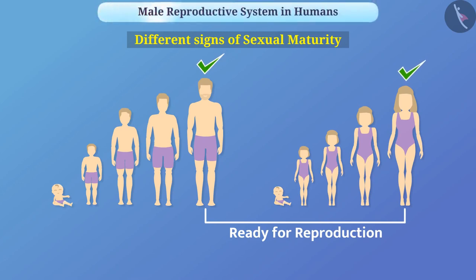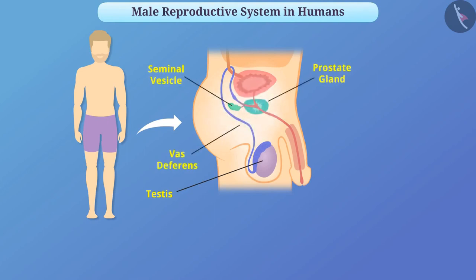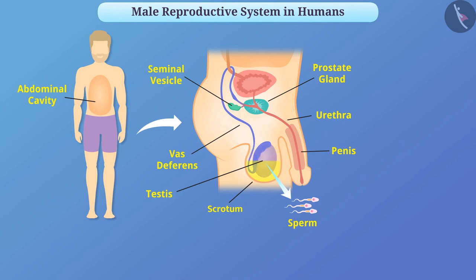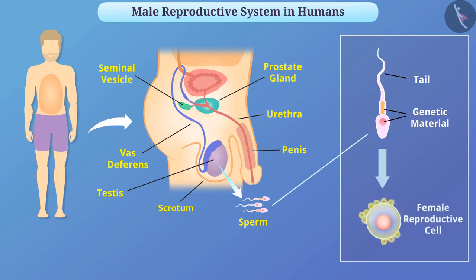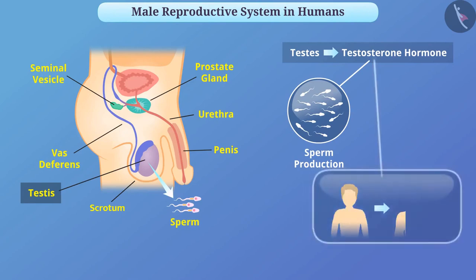Let us now understand the male reproductive system in humans. The male reproductive system consists of a pair of testes, the seminal vesicle, the vas deferens, the prostate gland, the urethra, and the penis. Each testis produces male germ cells called sperm. Since the temperature required for the generation of sperms is less than body temperature, the testes are located outside the abdominal cavity in the scrotum. A sperm is a micro structure and contains genetic material and a long tail that allows it to move toward the female reproductive cell.